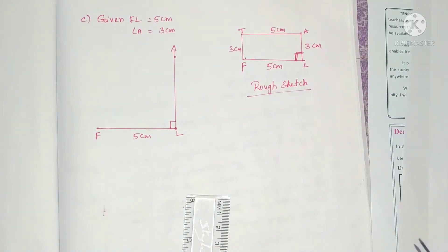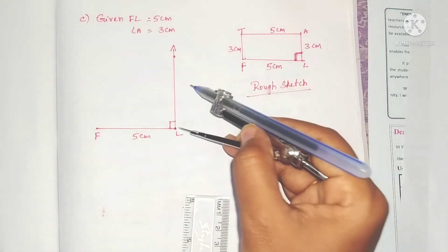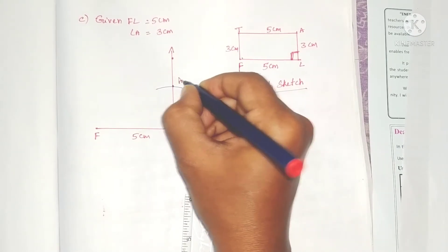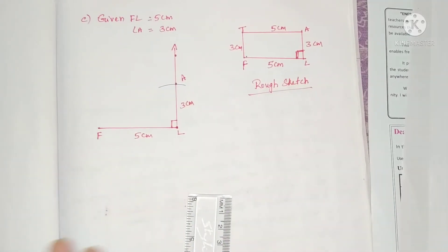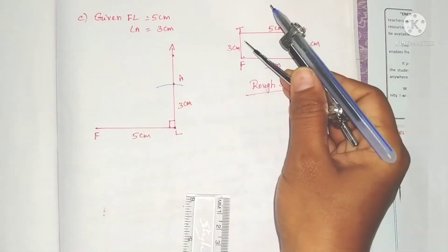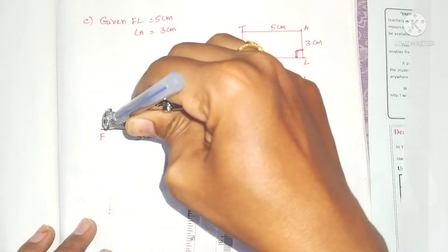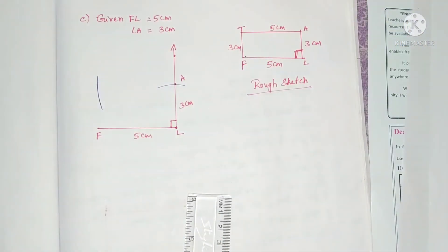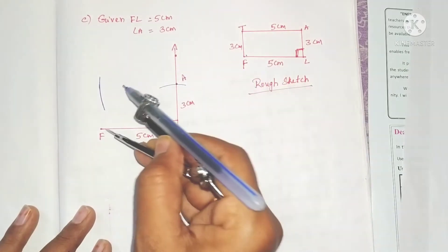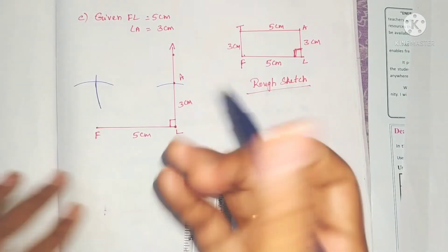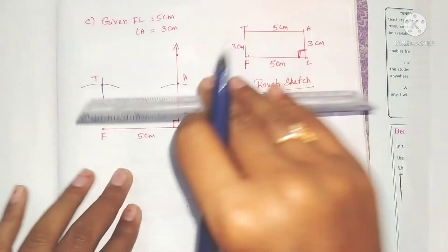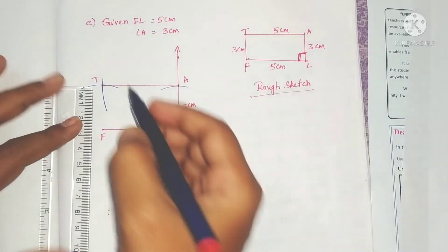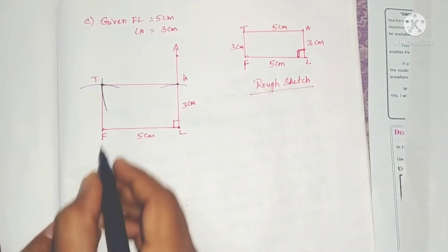With 3 centimeters radius, draw an arc from L along the ray. The intersection point is A, so LA equals 3 centimeters. Since opposite sides are equal, AT equals 5 centimeters. With A as center draw an arc of radius 5 centimeters, and from F draw an arc of radius 3 centimeters — the intersecting point is T. Join AT and TF.